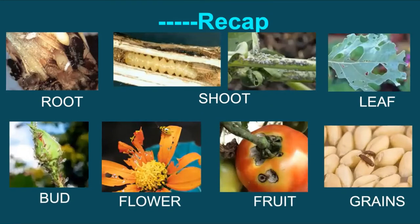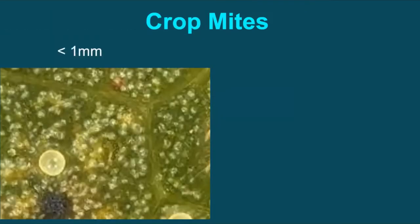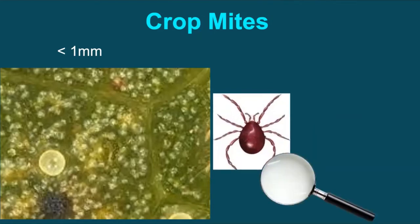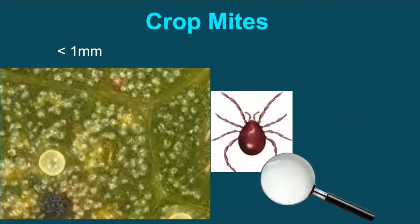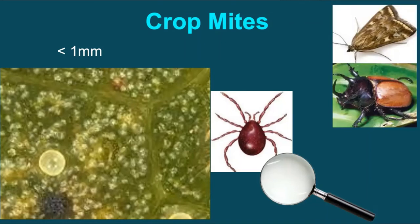You will be surprised to know that mites are entirely different pests from insects. Without going into any scientific detail, mites are minute — usually less than one millimeter — and some are so small that it can be difficult to see without a magnifying glass or hand lens. Adults have four pairs of legs, as against three pairs in insects, and all species of mites are wingless whereas most insects have wings.